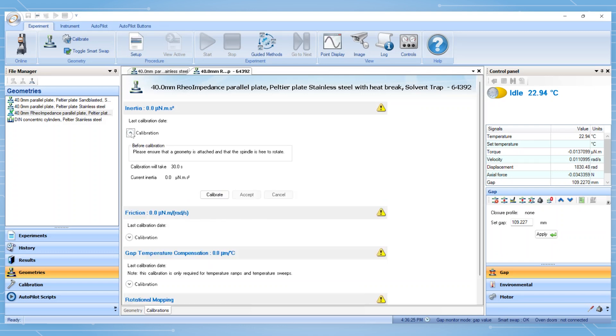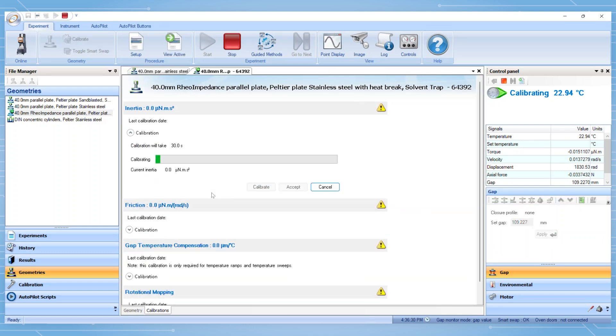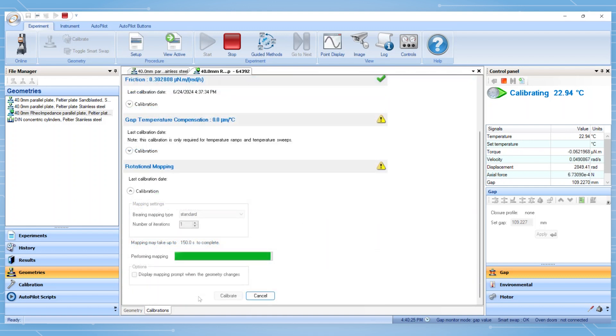Perform the geometry, inertia, friction, and rotational mapping calibrations. Gap temperature compensation should be performed before temperature ramps and sweeps.